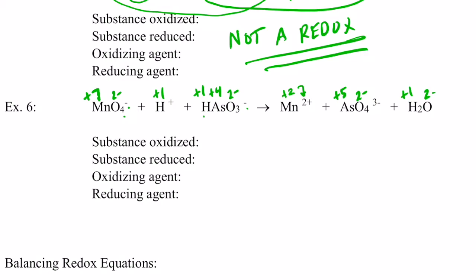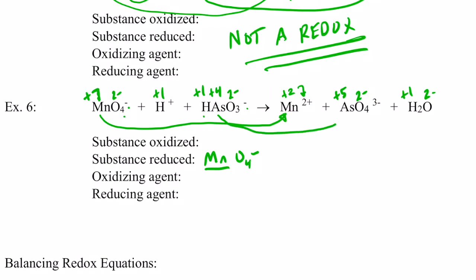Manganese went from positive seven to positive two — its charge was reduced, so it had to gain electrons. The substance reduced was the manganese in the permanganate ion. The arsenic went from positive four to positive five, so it had to lose electrons — the arsenic in HAsO₃⁻ was the substance oxidized. The oxidizing agent is MnO₄⁻, and the reducing agent is HAsO₃⁻.